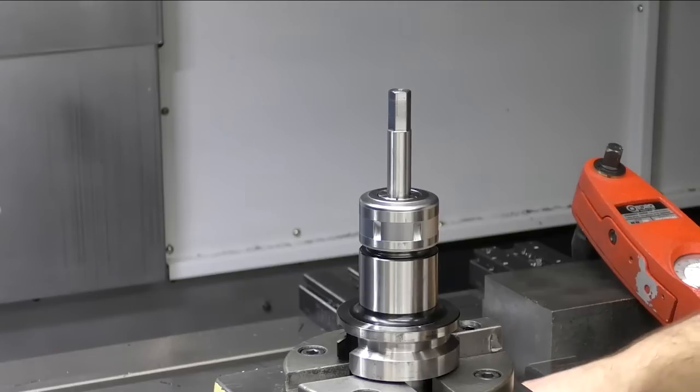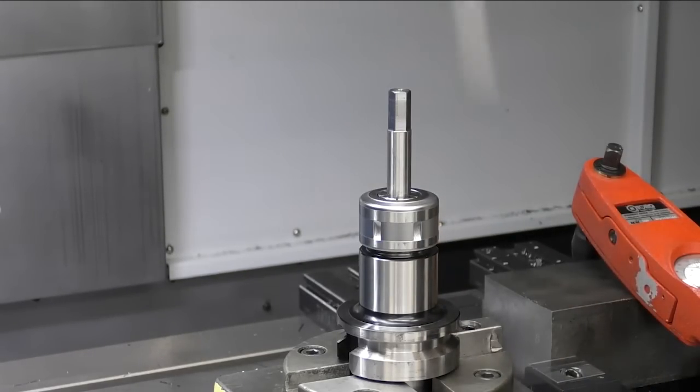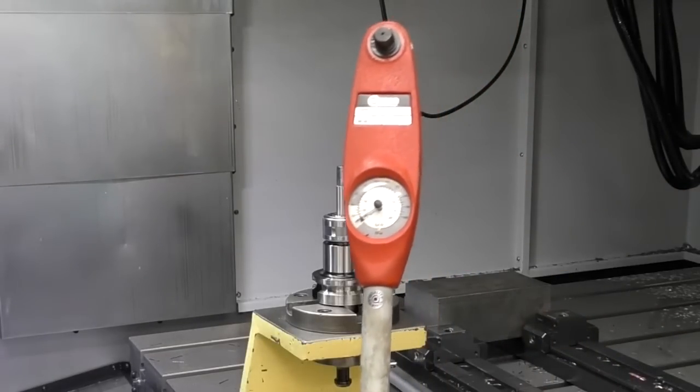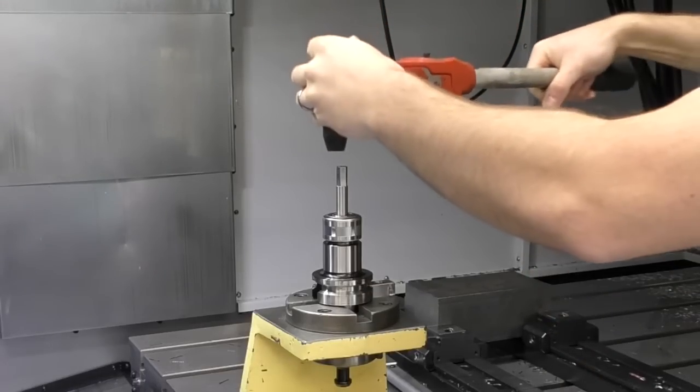So I've torqued the tool up there and we're just double checking stick out and we're just double checking that the torque wrench is reading zero, which it is, and we're going to just apply a constant load.